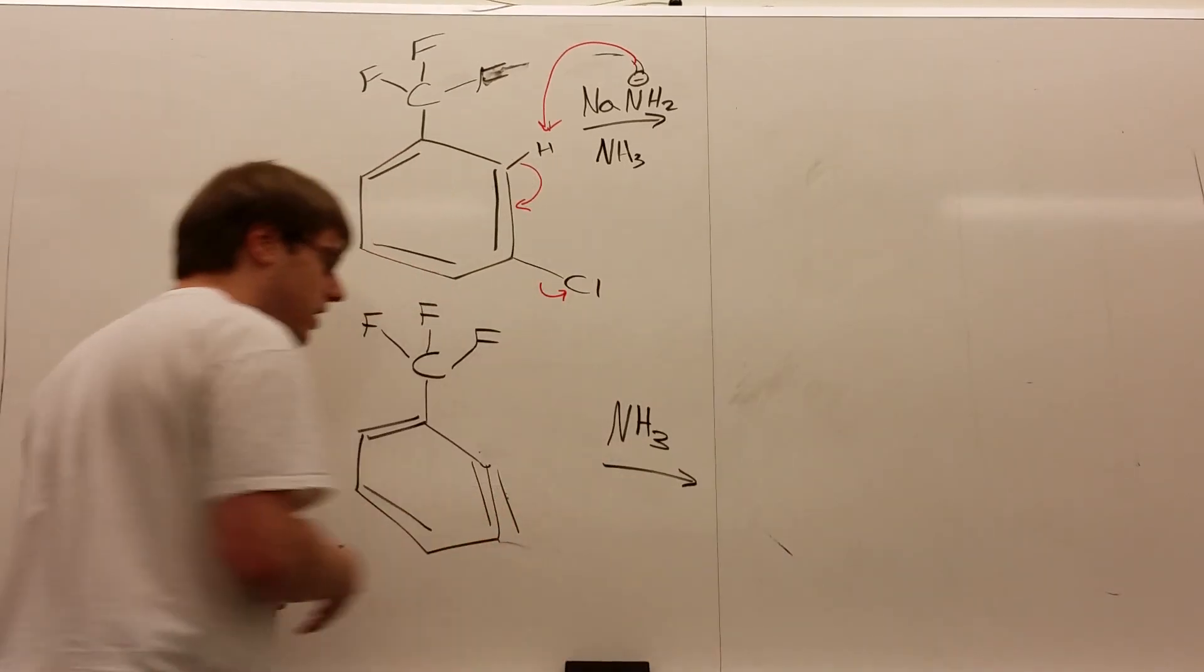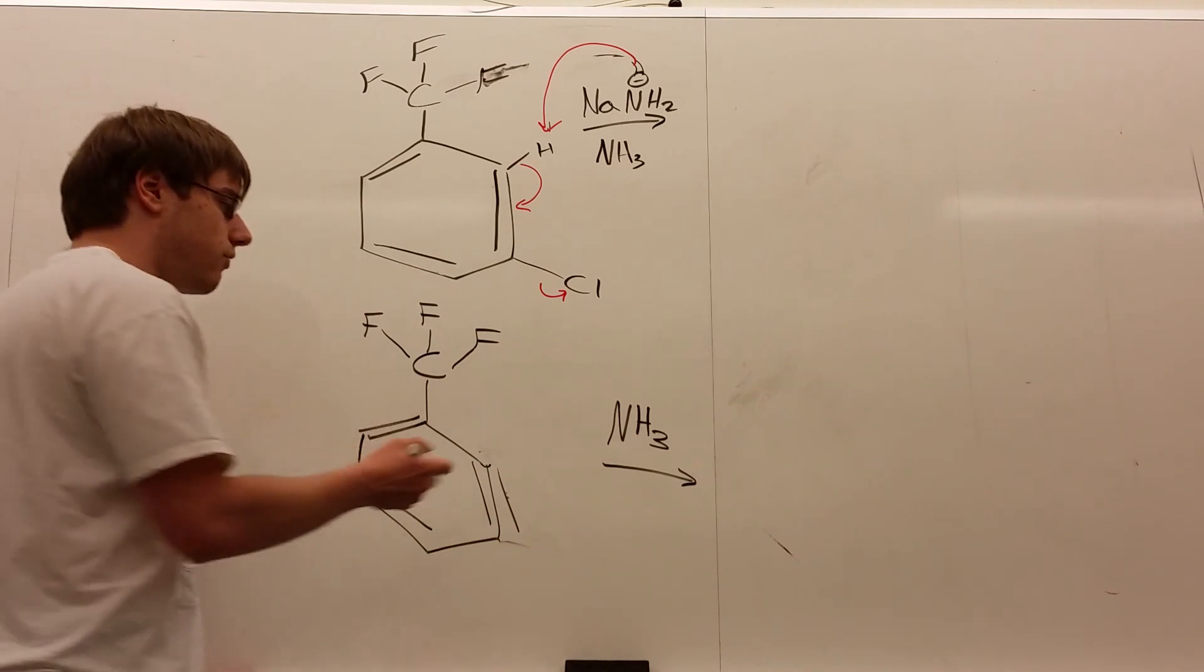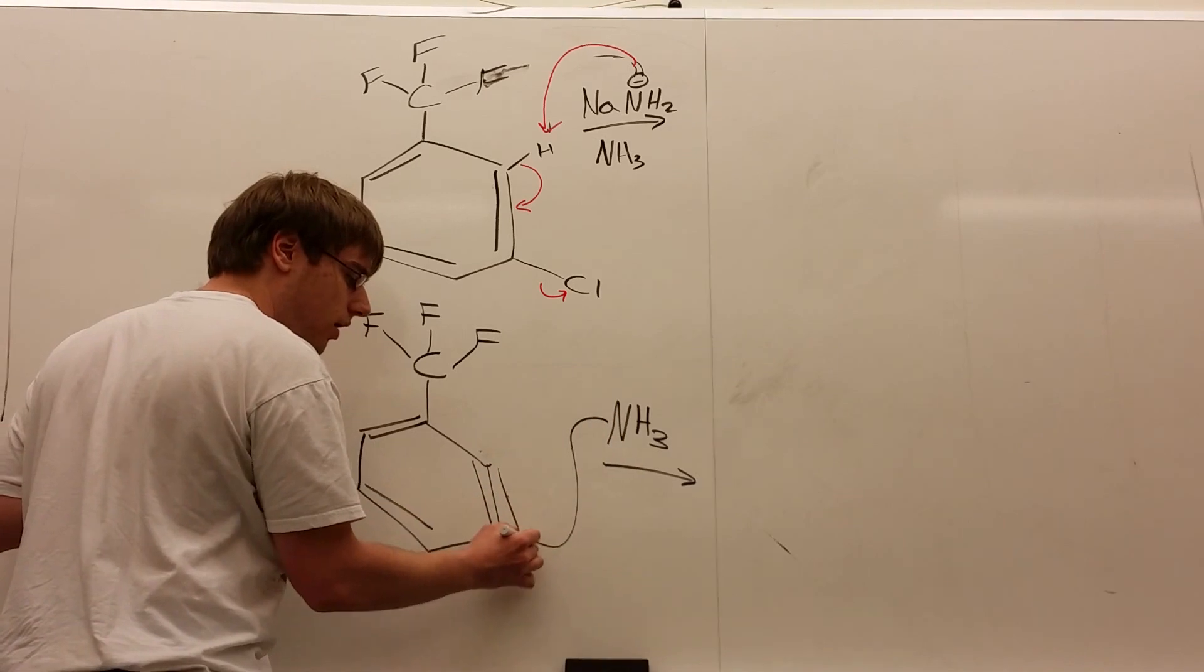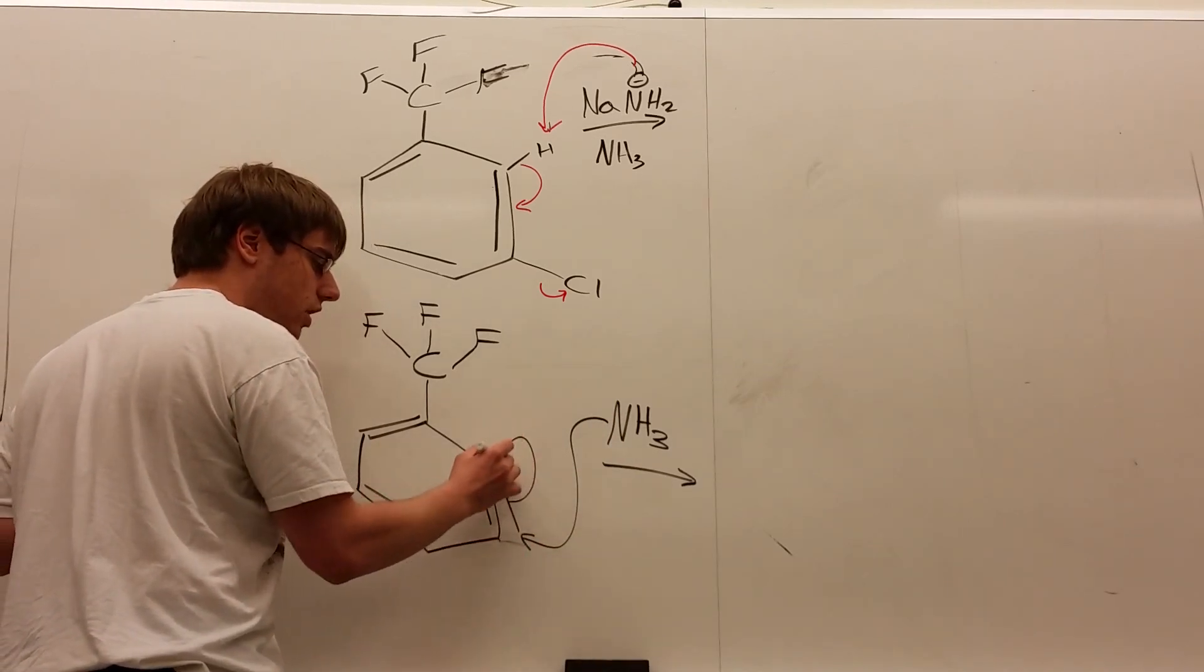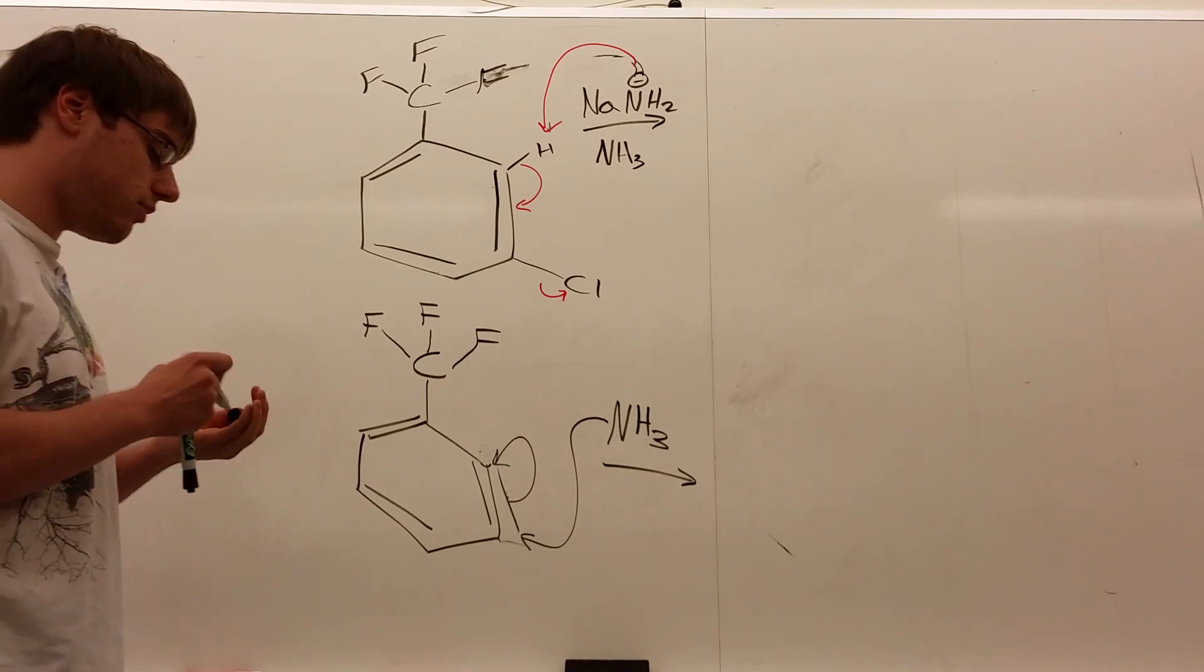Now, since we want that negative charge to be as close to our withdrawing group as possible, the NH3 is preferentially going to attack the bottom carbon, because that will push the electrons up to the ortho position, and that negative charge will be closer to the CF3 as a result.